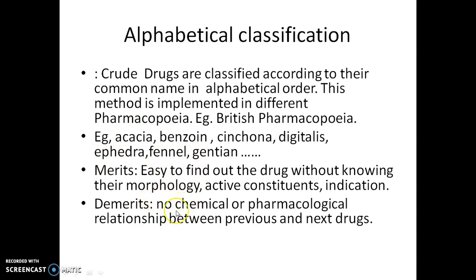The demerits are that there is no chemical or pharmacological relationship between drugs grouped together — the only criterion is that their names start with the same letter. So several dissimilar drugs are grouped in the same category, which is not always preferred by scientists. Also, one drug may have several synonyms, so if you don't know all synonyms, it is very difficult to search for a particular drug in a pharmacopoeia.